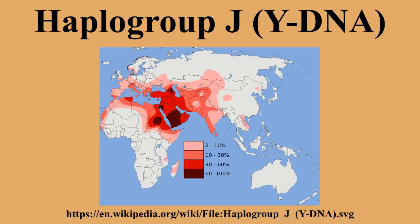Haplogroup JM304 is a Y-chromosome DNA haplogroup believed to have evolved in Western Asia. During the Neolithic, the clade spread primarily into North Africa, the Horn of Africa, Socotra, the Caucasus, Southeast Europe, Central Asia, Iran, Pakistan, and Western India.